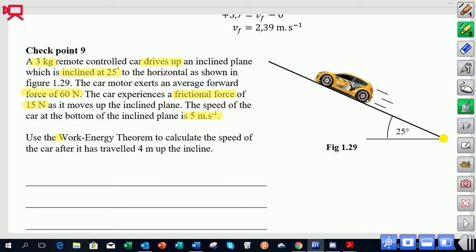What are we asked to do? We've got to use the work-energy theorem to calculate the speed of the car after it's traveled 4 meters up the inclined plane. So 4 meters up the inclined plane, what is its speed at that point? So pause the video and have a go at that question.